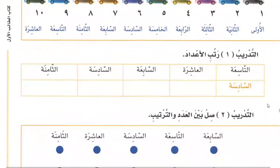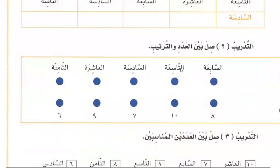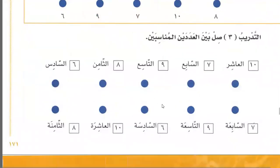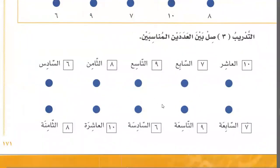Align the numbers — this is your homework. Join the number with its position. Also join the two appropriate numbers — join the masculine with the feminine. This is also your homework.